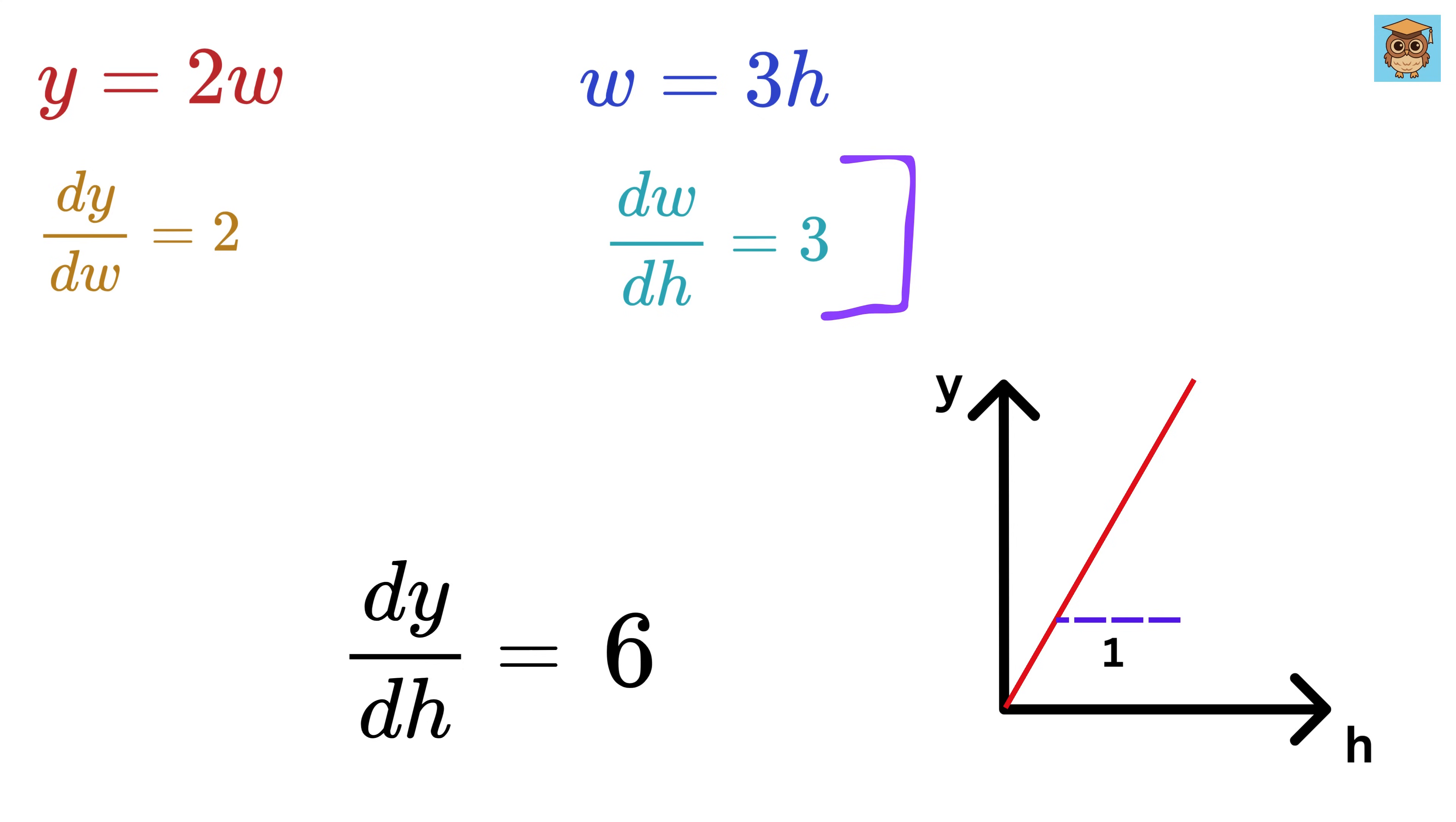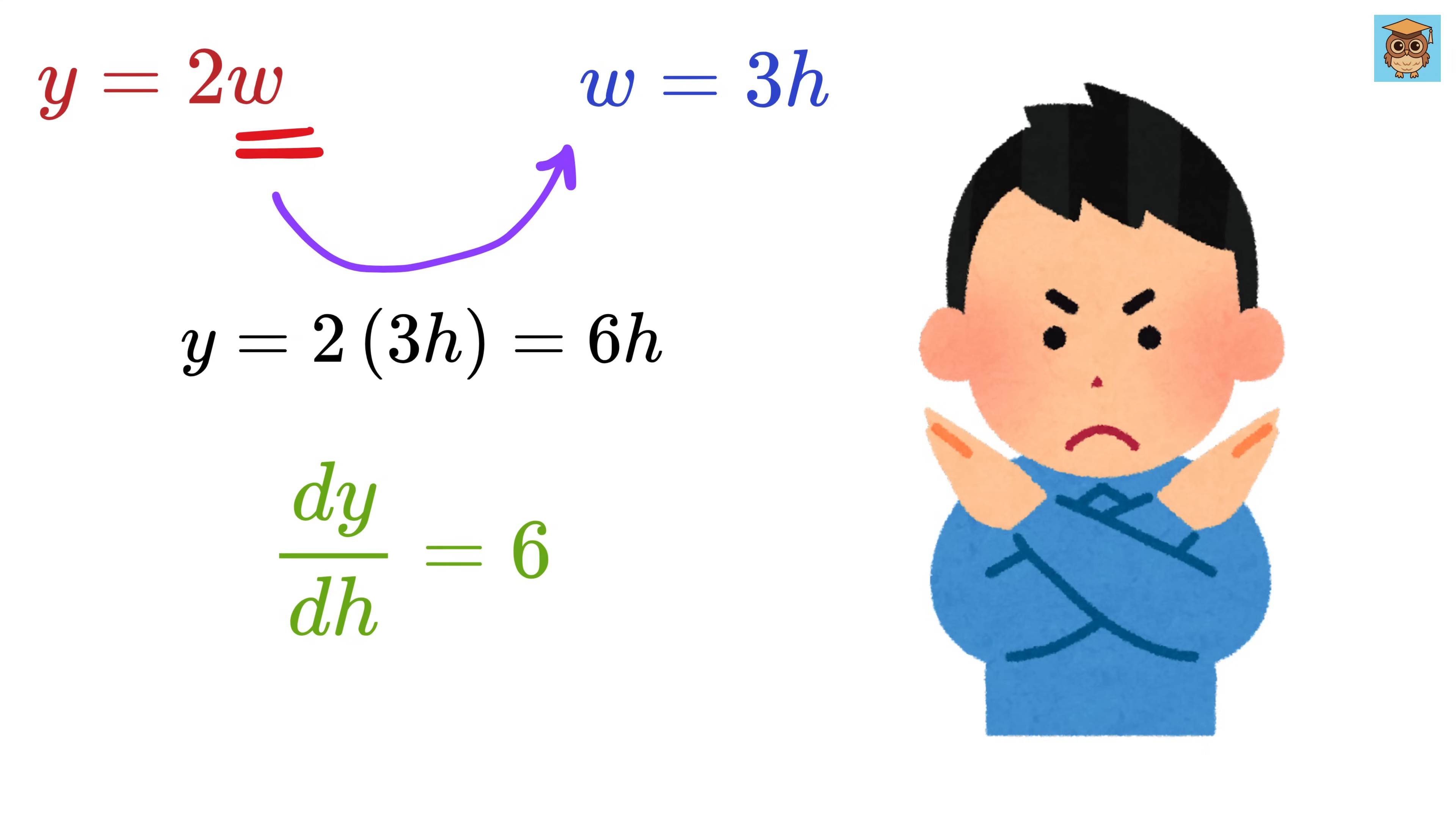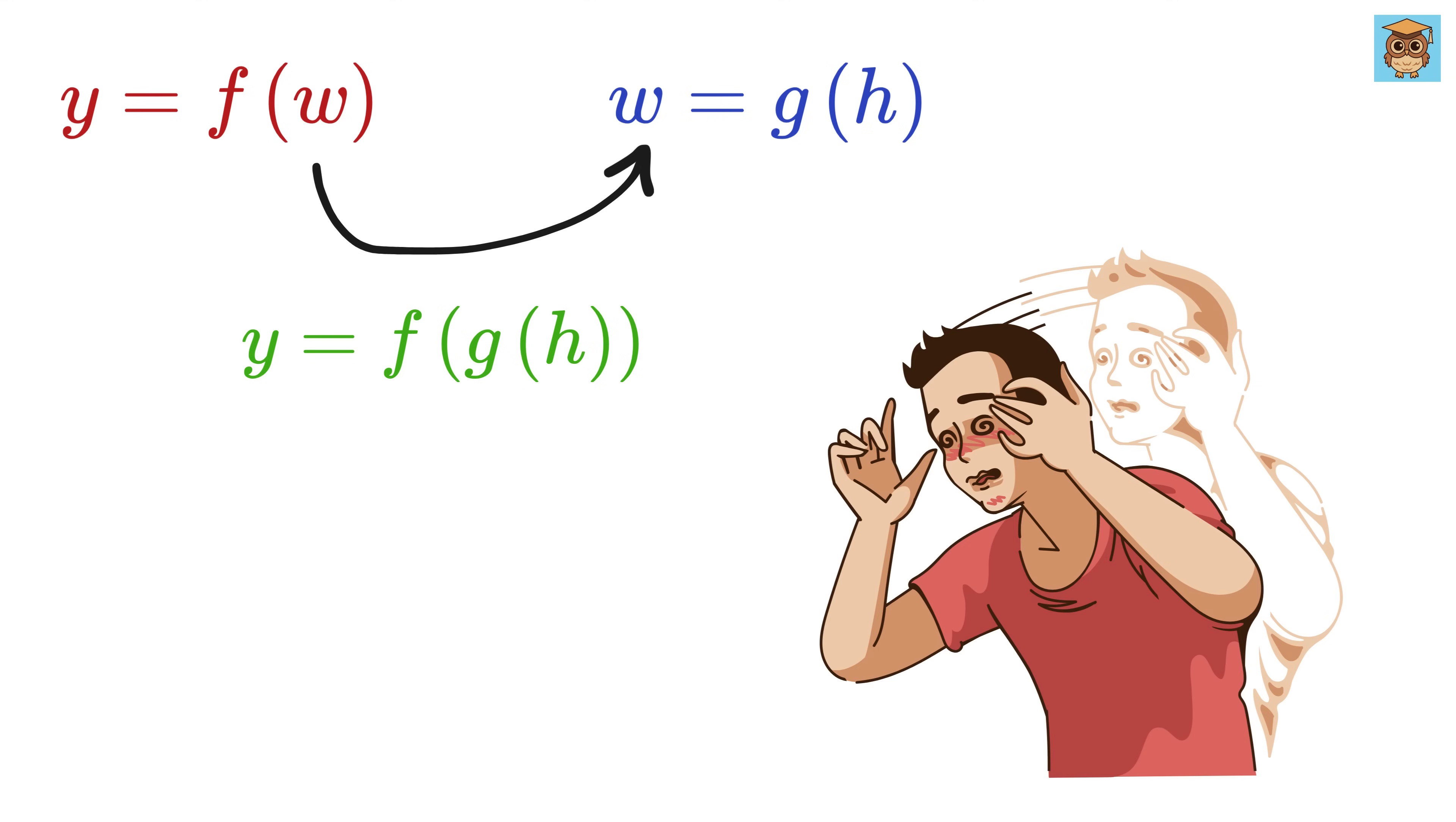This means if someone's height increases by one unit, their waist size increases by six units. We could have also expressed the w in this equation using this to get y equals two times three times h, or y equals six h. And then we could have differentiated y directly with respect to h to get dy by dh as six. But the whole point of the chain rule is that you don't need to combine all the equations into one big expression. Instead, you can look at how each part changes individually and then multiply those rates together. This approach becomes super useful when the relationships are complex or when it's hard to combine everything into a single equation.